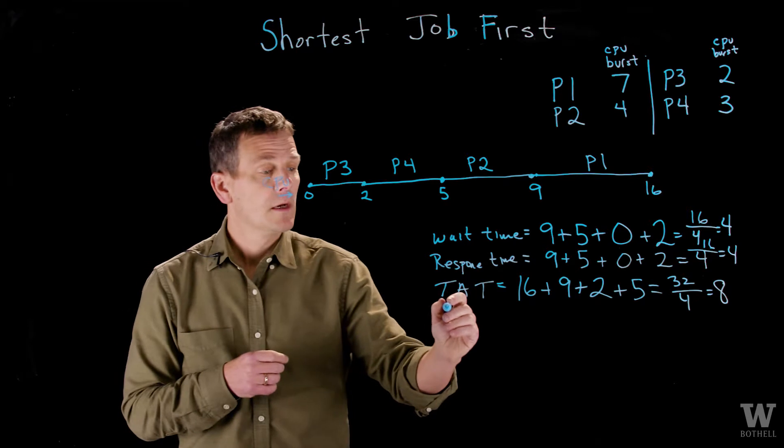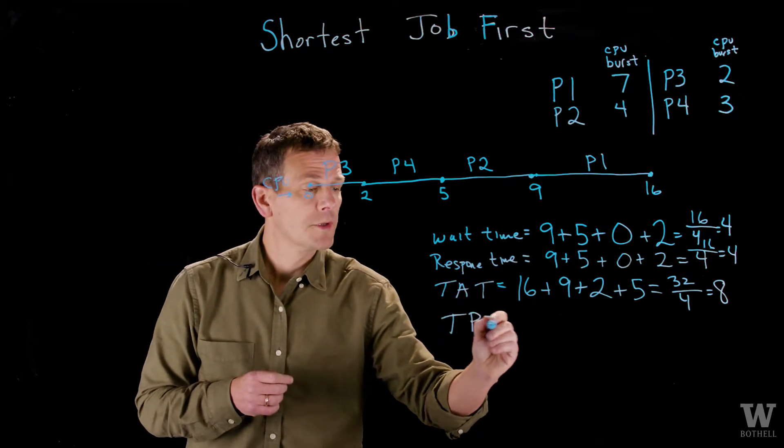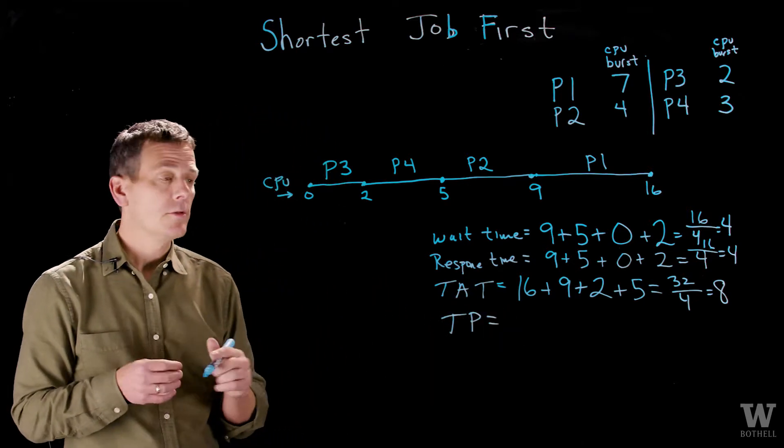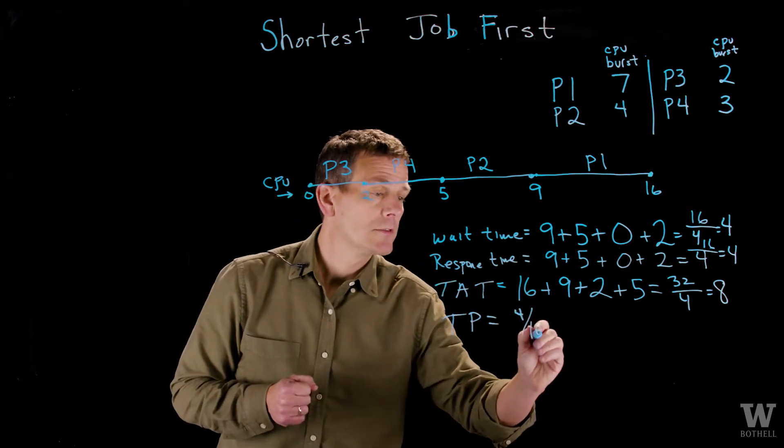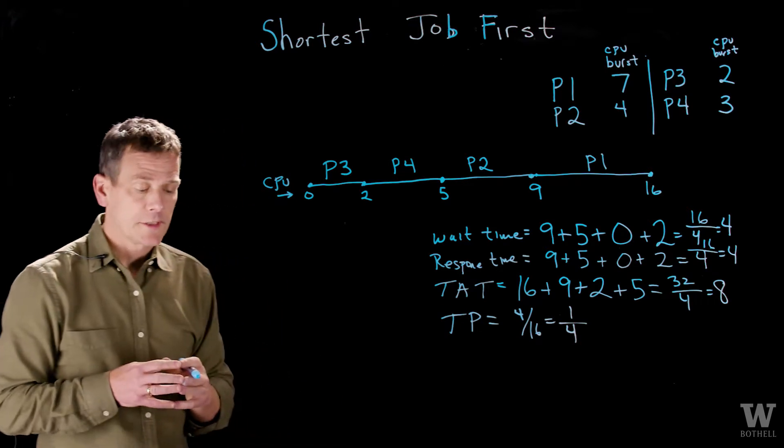And finally, throughput. Throughput is the number of jobs per unit time. Here we finished 4 jobs and it took us 16 units. So basically, 1 job every 4 units of time.